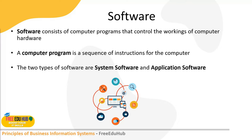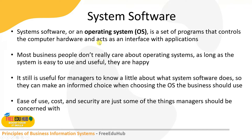System software is the operating system we use on our computer — like Windows 10, Windows 7, or Windows 11. It is a set of programs that controls the computer hardware and acts as an interface with the applications.